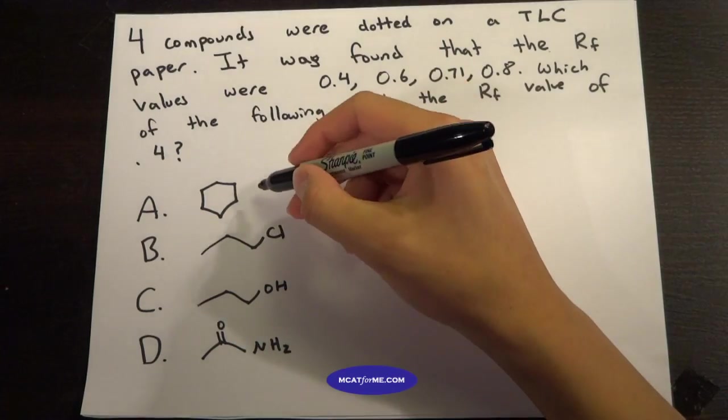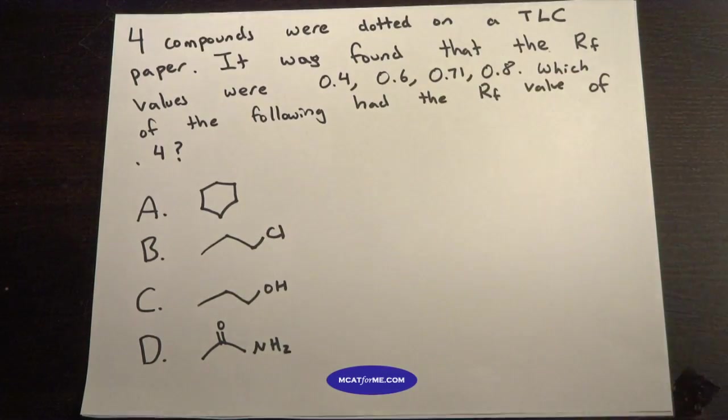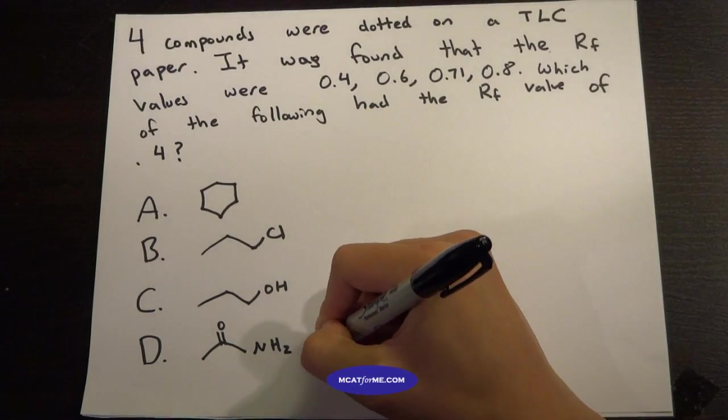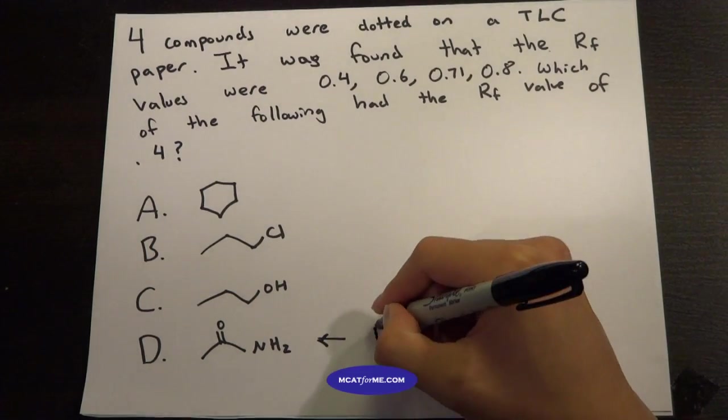So if you look at here, we have an alkane, a haloalkane, an alcohol, and an amide. And if you remembered from our chart, the amide is the strongest, the very, very strongest. So D would be our correct answer as the one that's 0.4.